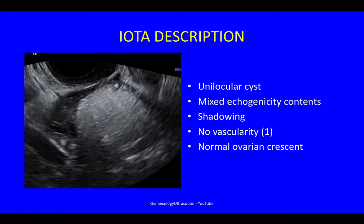Let's go through it and describe it using IOTA terminology to begin with. This is a unilocular cyst with mixed echogenicity contents, shadowing, no vascularity, and a normal ovarian crescent.